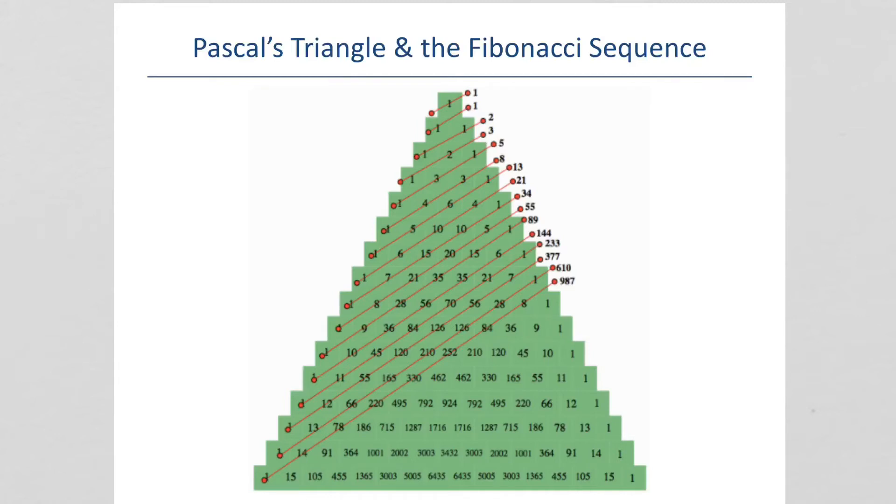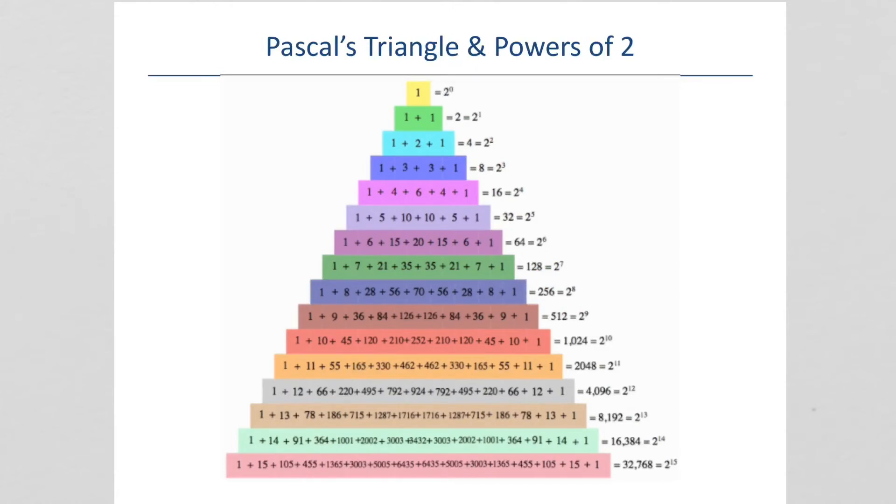This triangle produces so many things. And I may be asking you to do a project. And so, you could choose to do your project on Pascal's Triangle and talk about the different things that happen with it. But one of them is, if you take everything diagonal like this, it's actually Fibonacci's sequence. So, 1, 1, 2, 1 plus 2 is 3, 1 plus 3 plus 1 is 5, 1 plus 4 plus 3 is 8, 1 plus 5 plus 6 plus 1 is 13. And it keeps going.